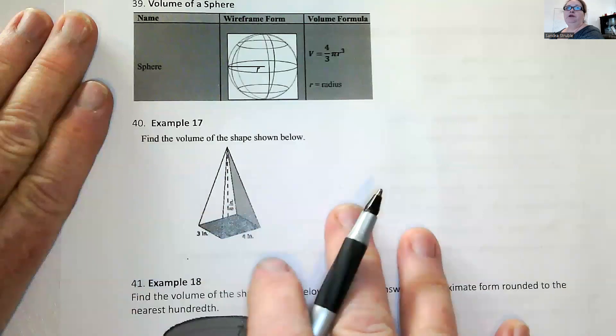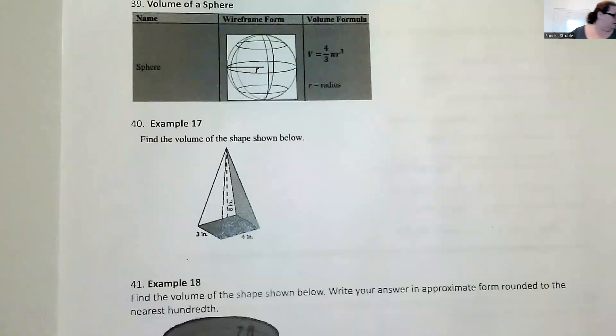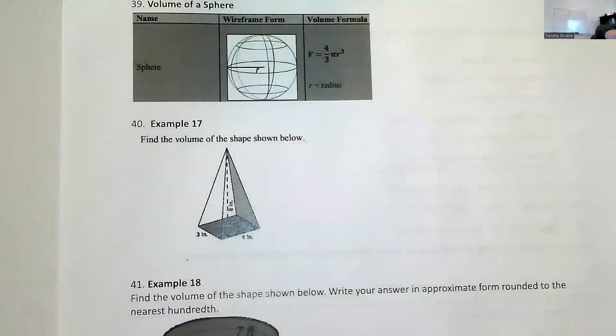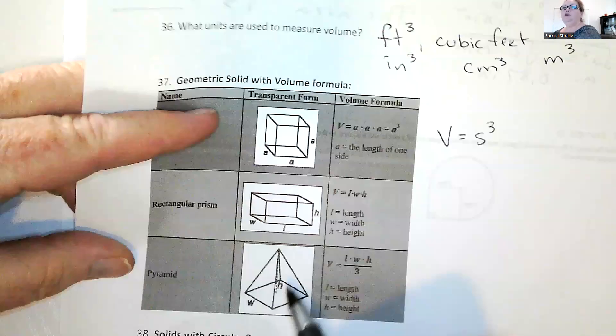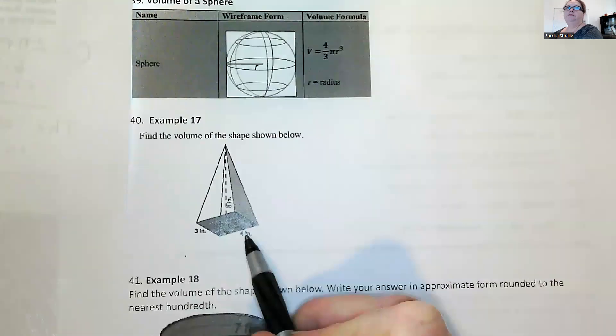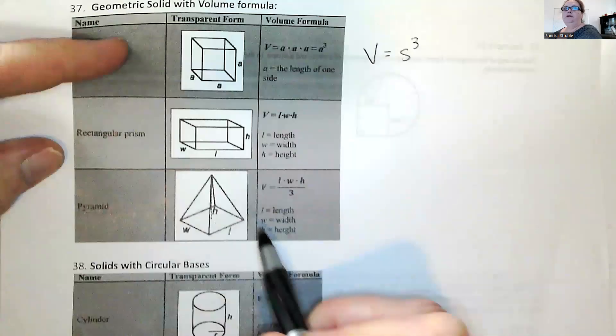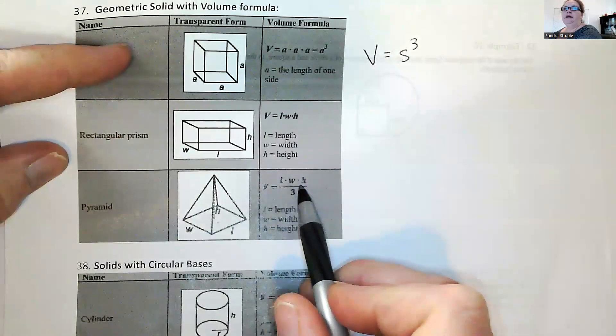So let's find the volume of the shape below. So what is this? So a pyramid is what we're looking at. So a pyramid is the volume is length times width times height divided by three.